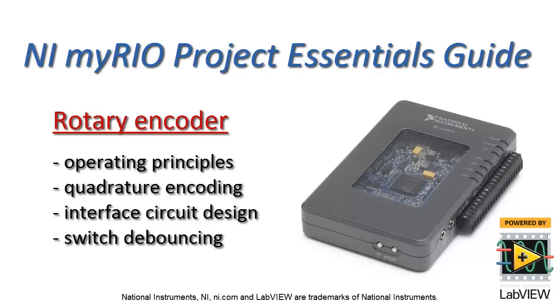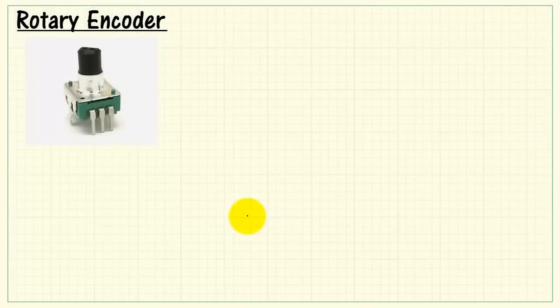Let's take a look at the operating principles of the rotary encoder. We'll look at quadrature encoding, interface circuit design, and switch debouncing.